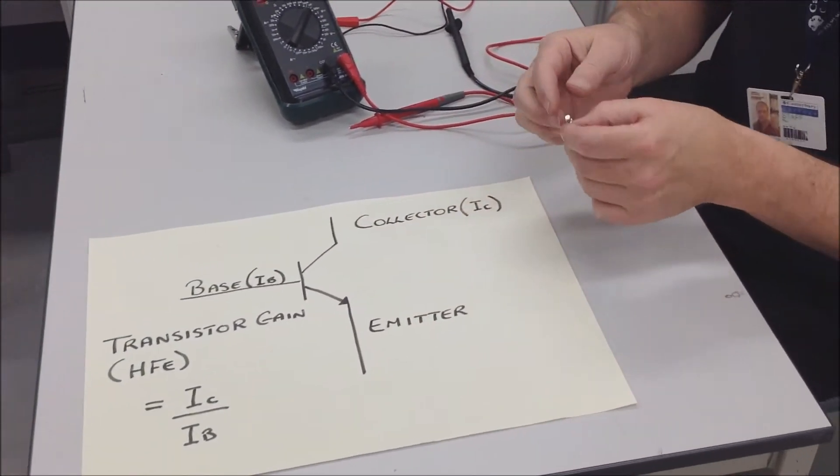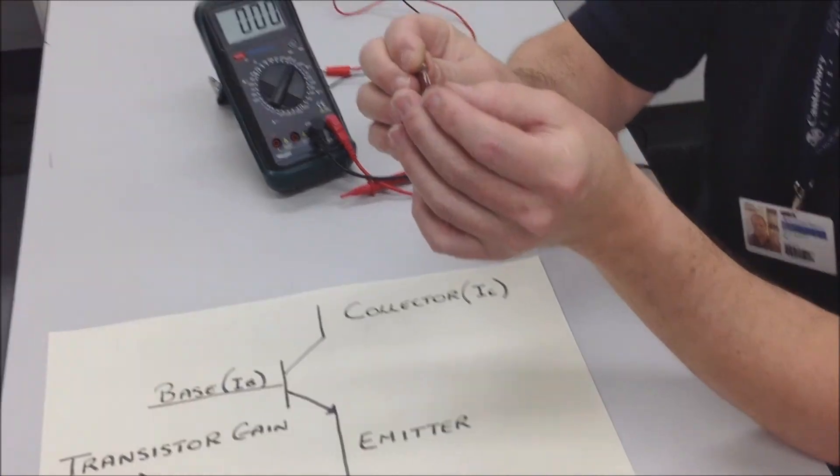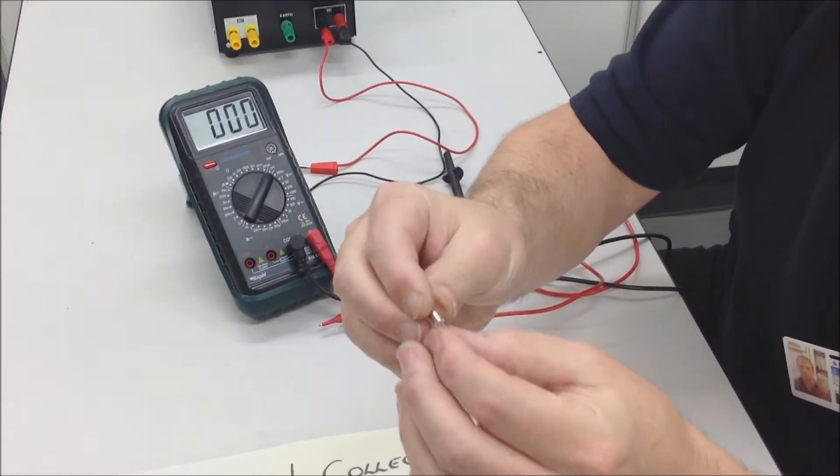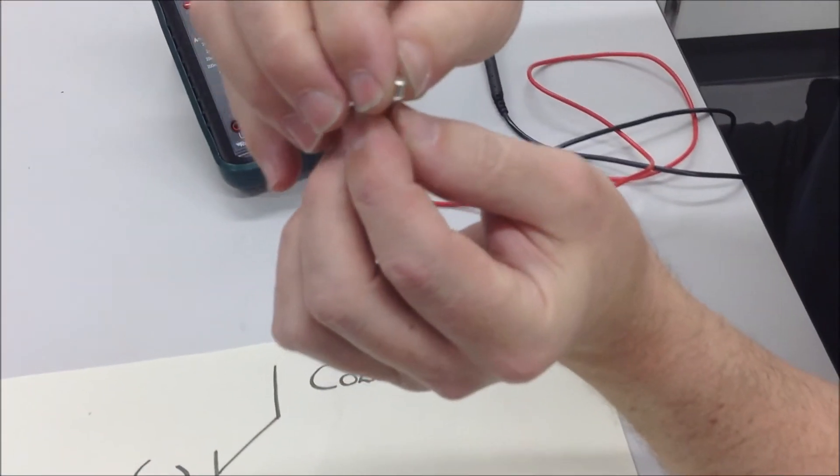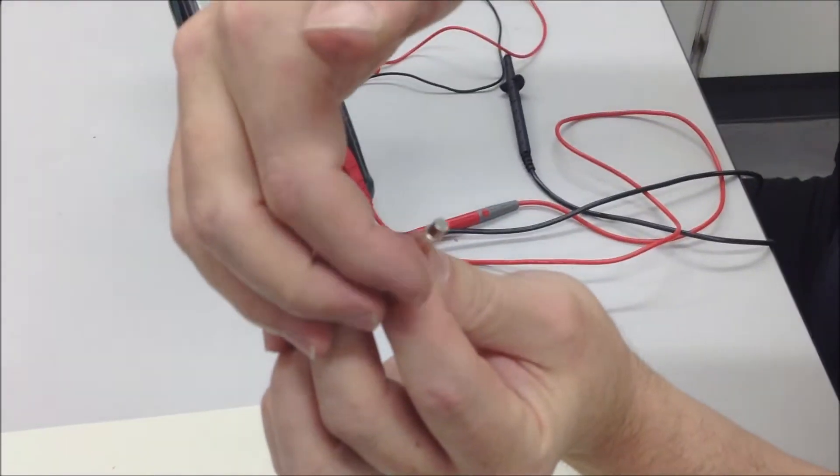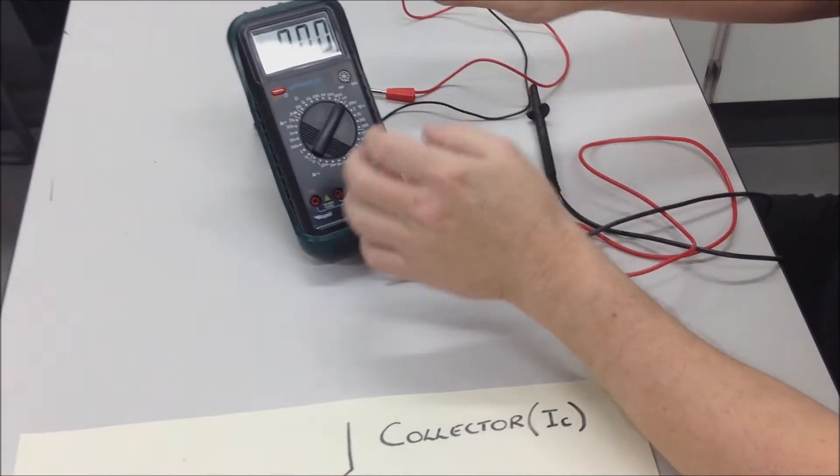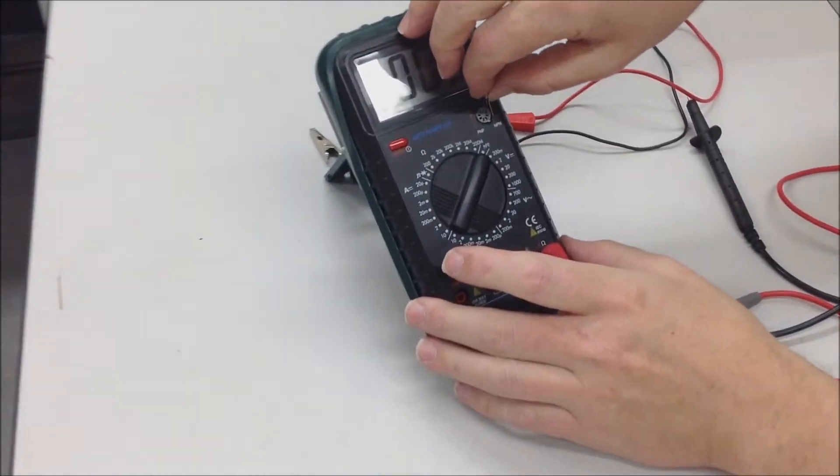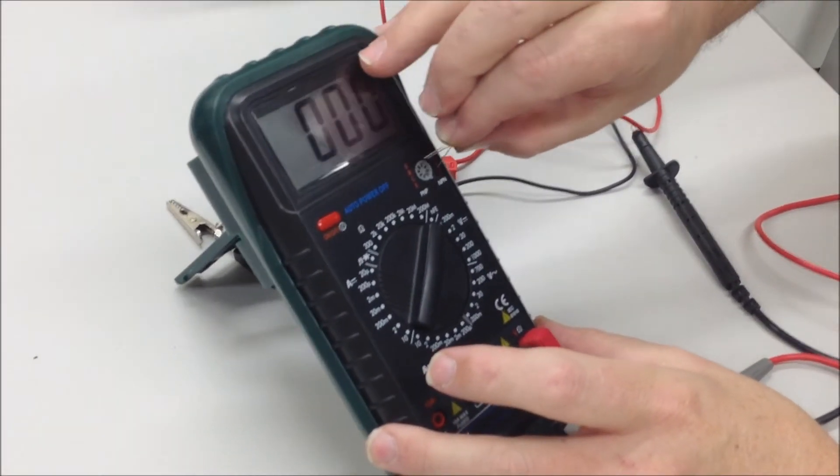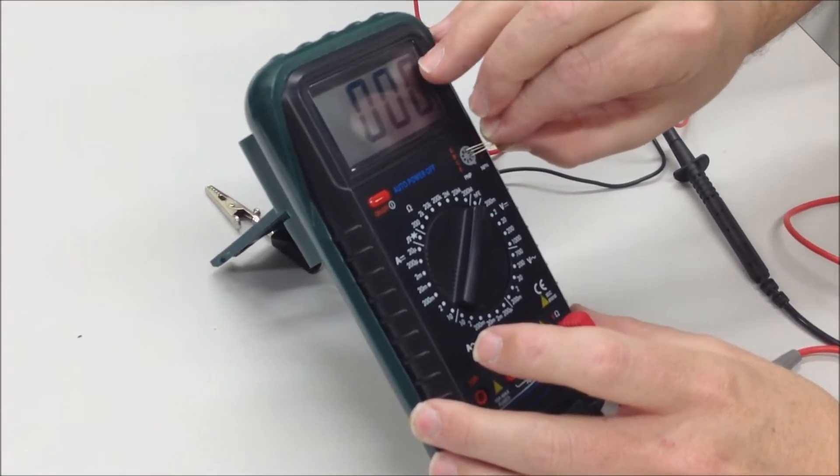And each transistor will be slightly different. So, what we do is we get our transistor, we check the emitter leg, and it's usually the little tab there. And that will insert into here, like so.